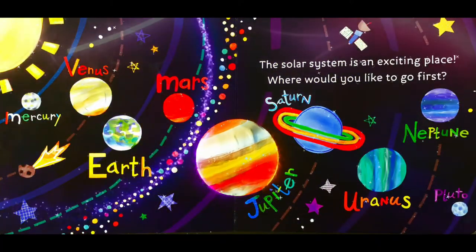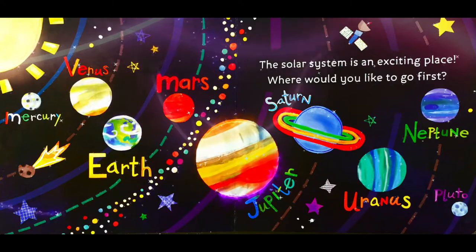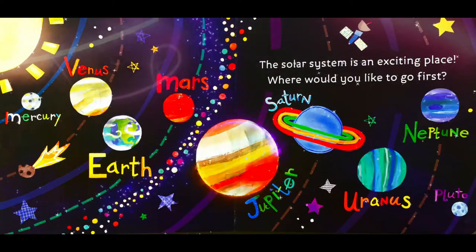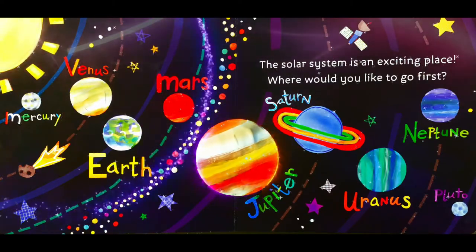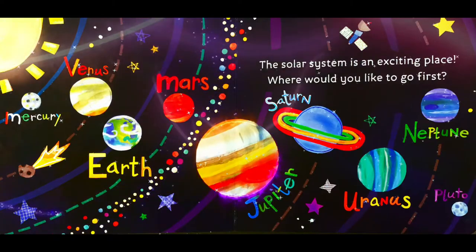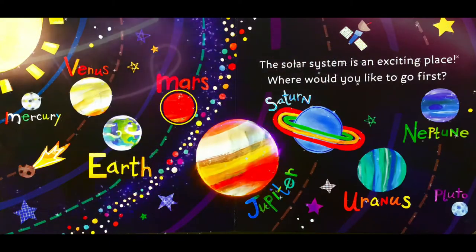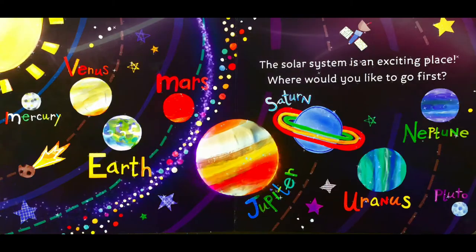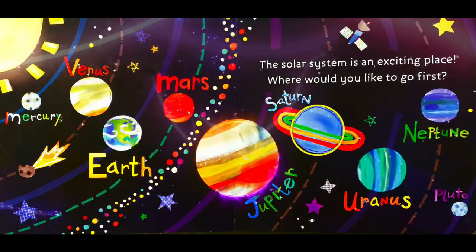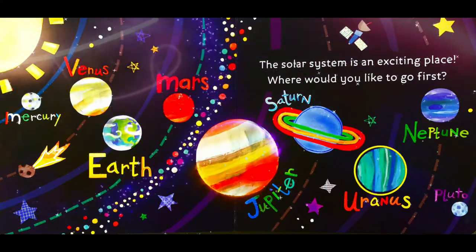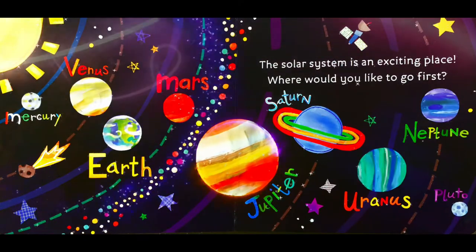The solar system is an exciting place. Where would you like to go first? Mercury, Venus, Earth, Mars, Jupiter, Saturn, Uranus, Neptune, or Pluto?